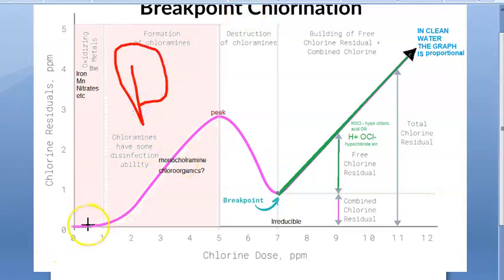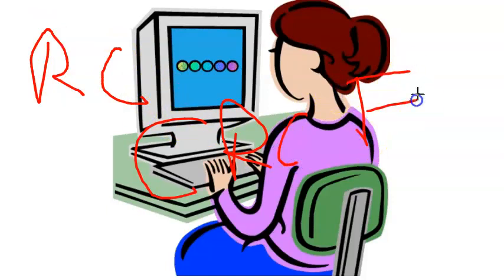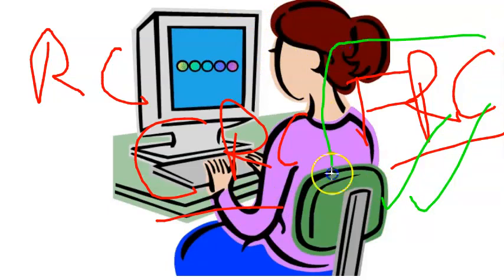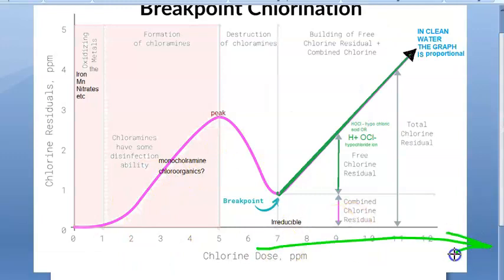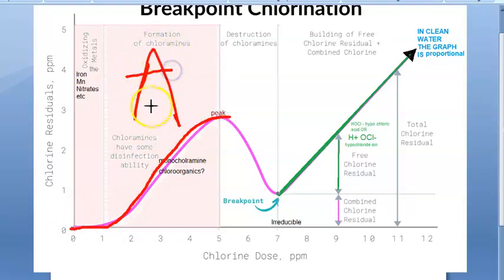When the water is dirty, initially there is no chlorine residue at all. Residual chlorine has two types: combined residual chlorine and free residual chlorine (FRC). Free residual chlorine is much more capable in disinfection. Initially, combined residual chlorine builds up as the water becomes cleaner. This is because chlorine is combining with ammonia released by bacteria, forming chloramines. Chloramines have some disinfection ability, but not as good as free residual chlorine.